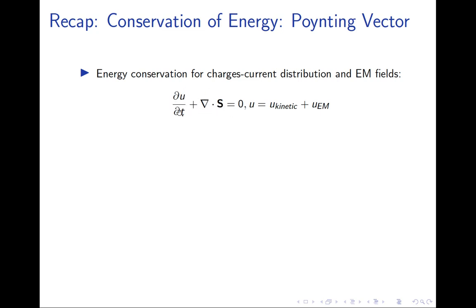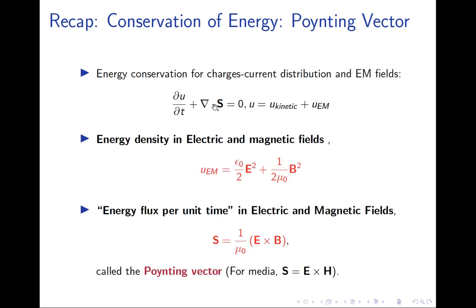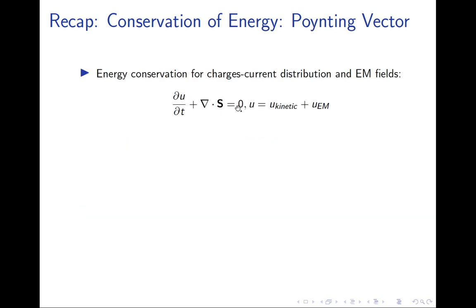Energy conservation can be written as a continuity equation. The conserved quantity is not just the kinetic energy of the charges but also the energy of the electromagnetic field. The total energy — kinetic energy of moving charges plus EM field energy — is conserved, and is given by this continuity equation with energy density and energy current density.